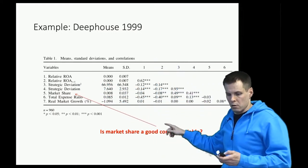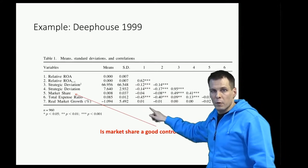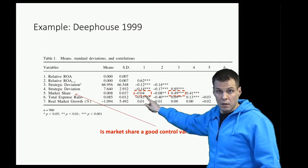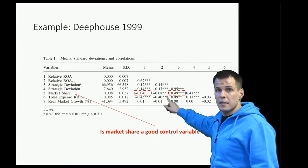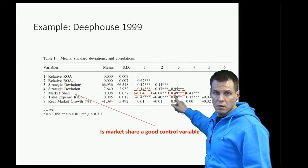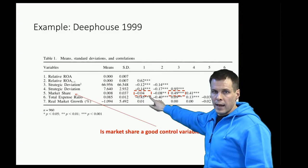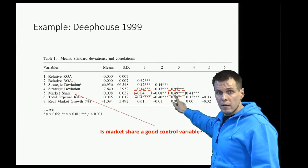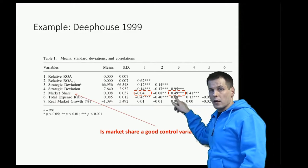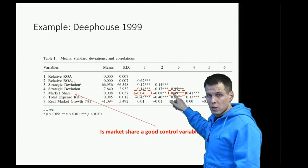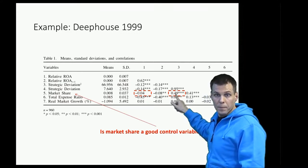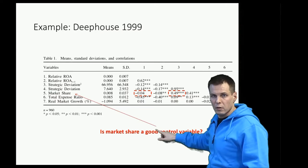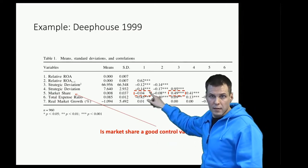We need to look at the correlations of market share with variable one and variable four. Market share is weakly and negatively correlated with return on assets, and it's very strongly correlated with strategic deviation. We can't infer causation from a correlation alone, but this strong correlation raises the question: if market share has an effect on return on assets, and it's correlated with the strategic deviation variable, it could create a spurious correlation. So market share is a relevant control if we have theoretical reasons that return on assets depends on market share.